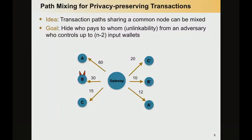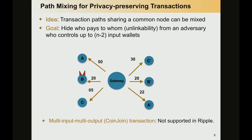The ultimate goal is to have an atomic transaction that allows us to atomically send a fixed amount of credit — let's say 10 credits — from each of the input wallets to each of the output wallets. The easier way would be to have a multi-input, multi-output transaction like a CoinJoin transaction in Bitcoin. However, we don't really have that in Ripple — the only thing we have is transactions with only one sender and only one receiver.